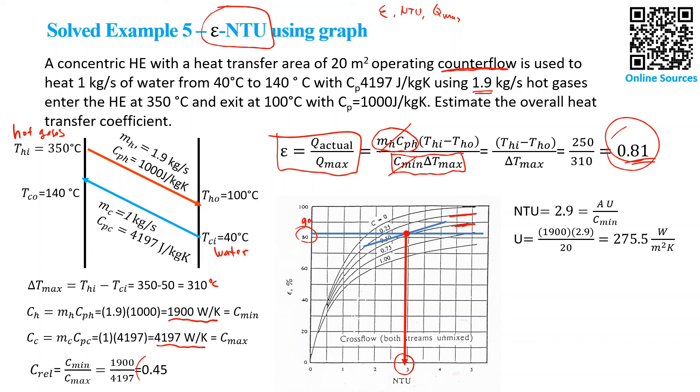From the equation, we know that NTU equals AU divided by Cmin, so eventually we can estimate the overall heat transfer coefficient equal to 275.5 Watt per square meter Kelvin.